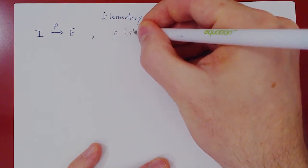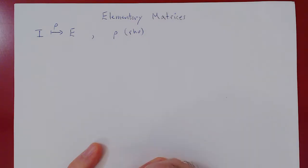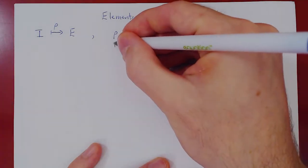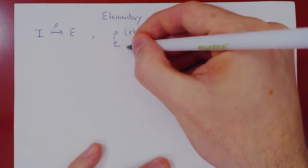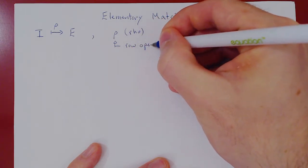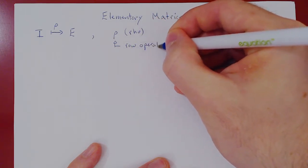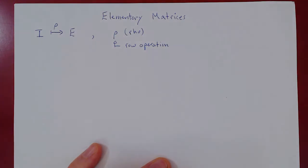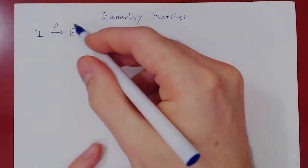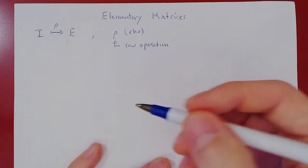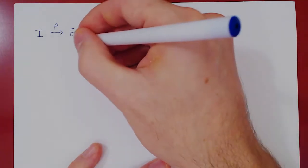Rho, written as RHO, is the Greek letter R and stands for a single row operation. If E can be obtained from I by applying a single row operation, E is called elementary.